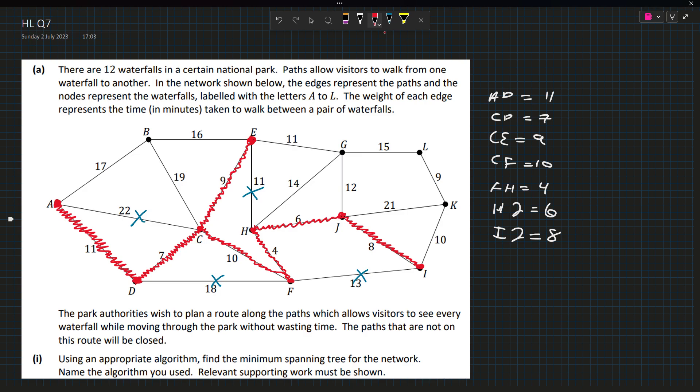It looks to be 10, 17, 16, 19, 11, 14, 12, 21, 10. So IK, 10. This also blocks JK because that creates a cycle. Now next smallest is KL at 9. So KL equals 9. Doesn't make the possibility for cycles. Next smallest appears to be EG at 11. So EG is 11.